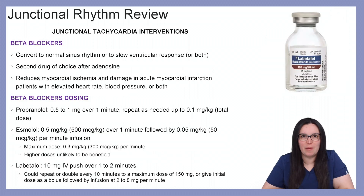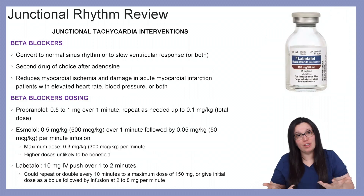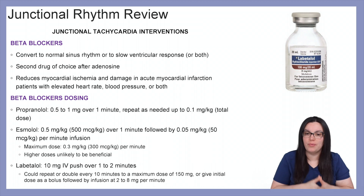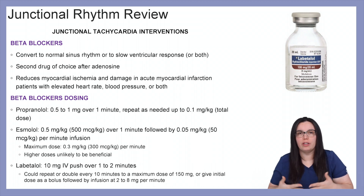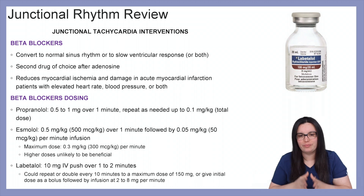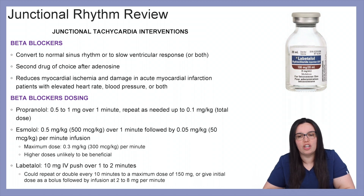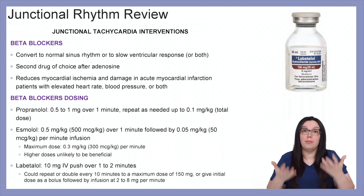Beta blockers can convert to normal sinus rhythm, slow ventricular response, or both. They are the second drug of choice after adenosine and reduce myocardial ischemia and damage in acute myocardial infarction patients with elevated heart rates, blood pressure, or both.